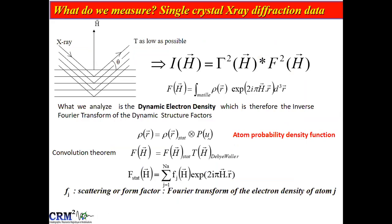For X-ray diffraction, everybody knows that the intensity we are measuring is the product of the square of the interference function times the square of the structure factor. The structure factor is a Fourier transform of the electron density, but as we are measuring at a certain temperature, what we analyze is a dynamic electron density, which is in fact the static electron density — which we would calculate with DFT — convoluted by the atomic probability density function due to temperature. Due to the convolution theorem, this structure factor is the static structure factor times the Debye-Waller factor.